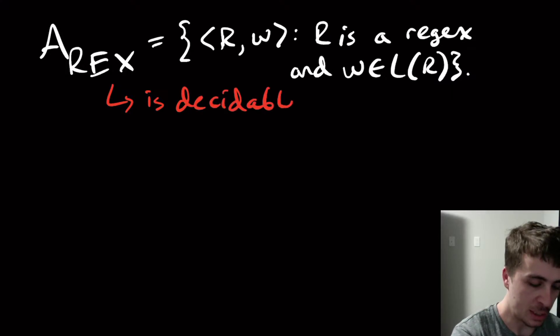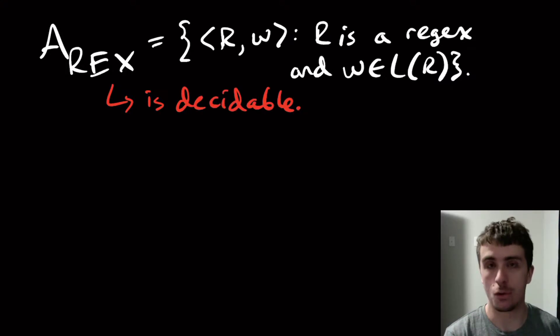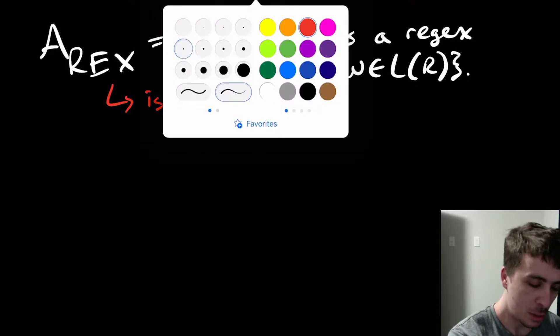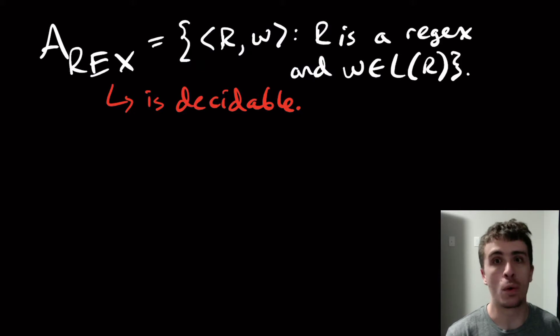So how do we show that it's decidable? We make a decider for it, which obviously runs in a finite amount of time. So the really straightforward answer is let's just convert it to an nfa and run the decider for a sub nfa on it.